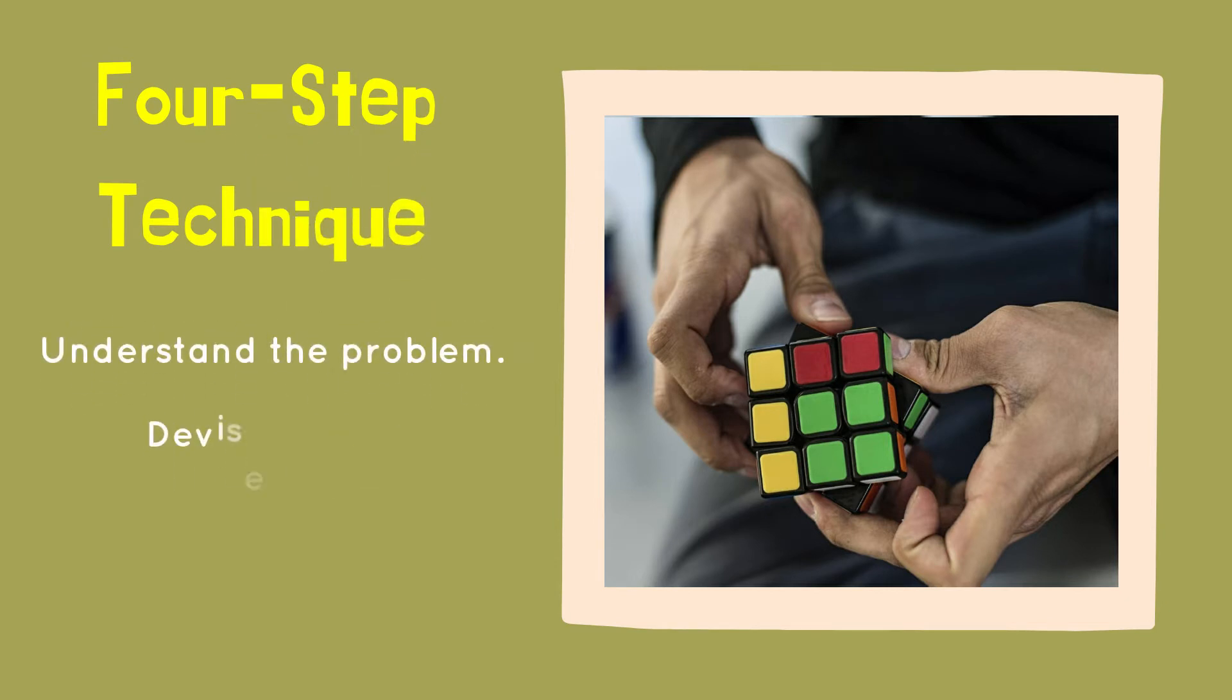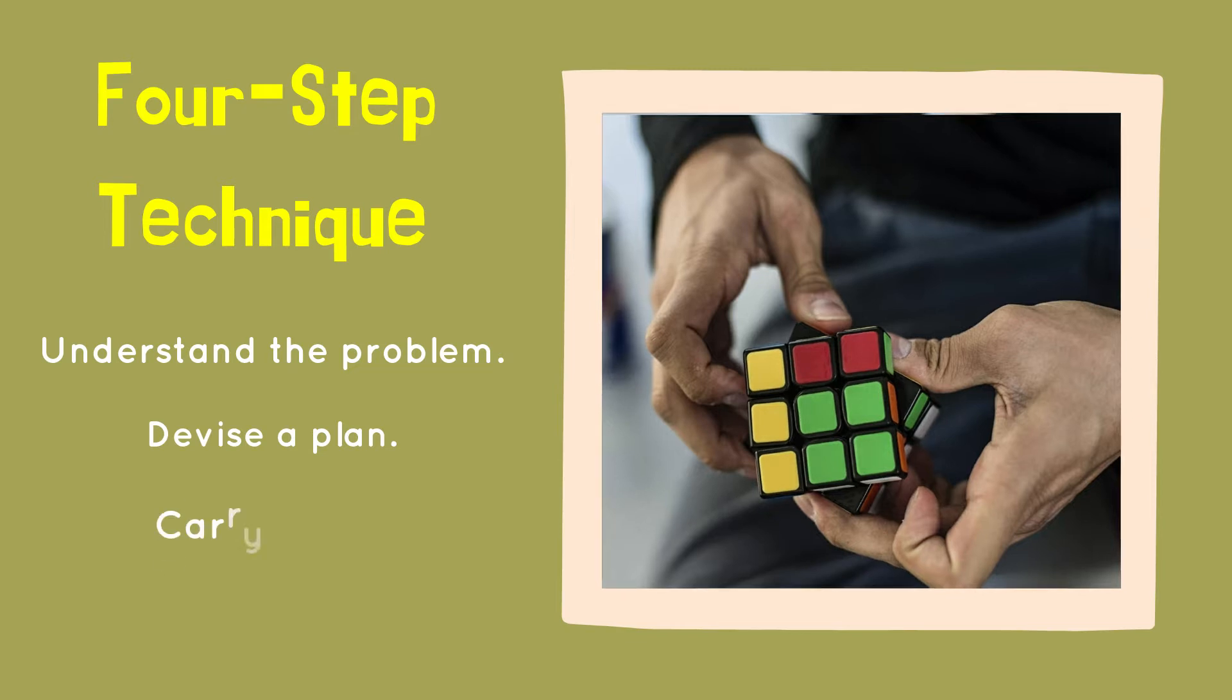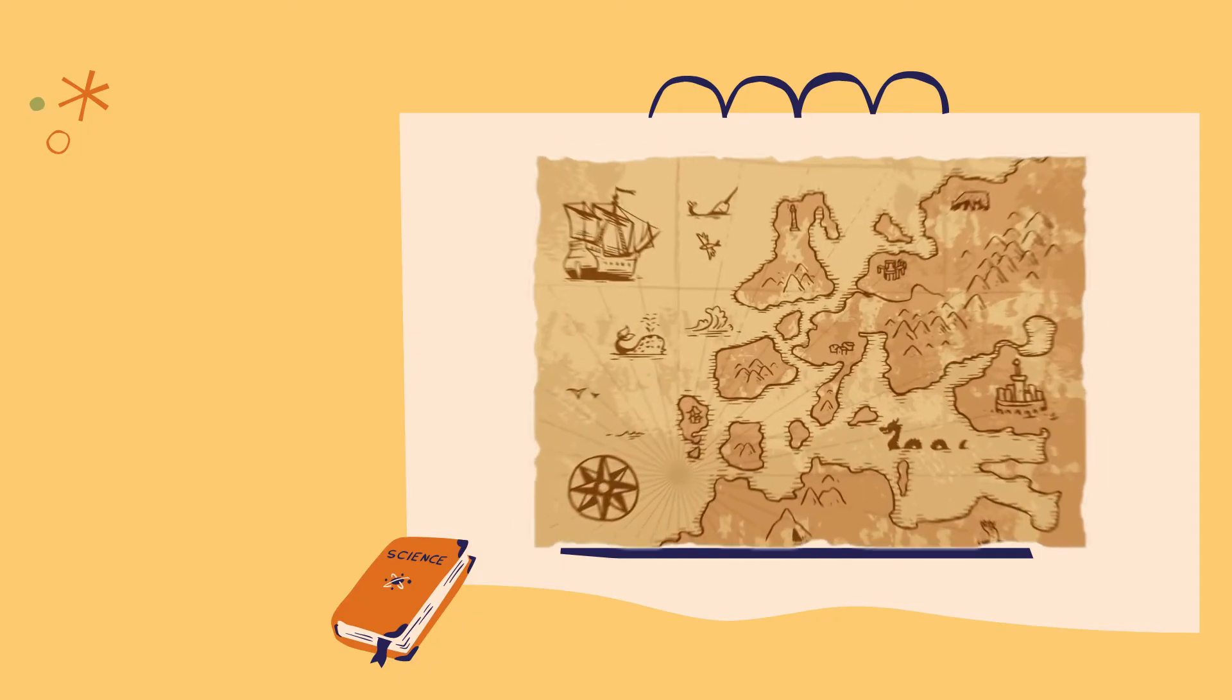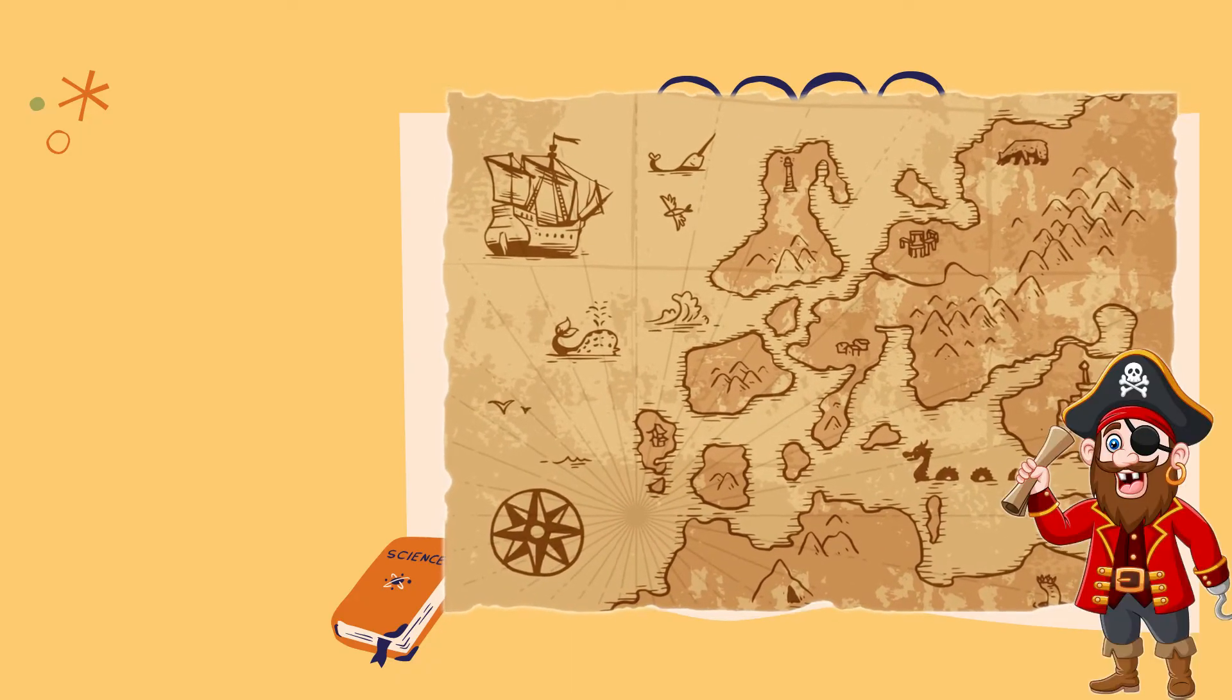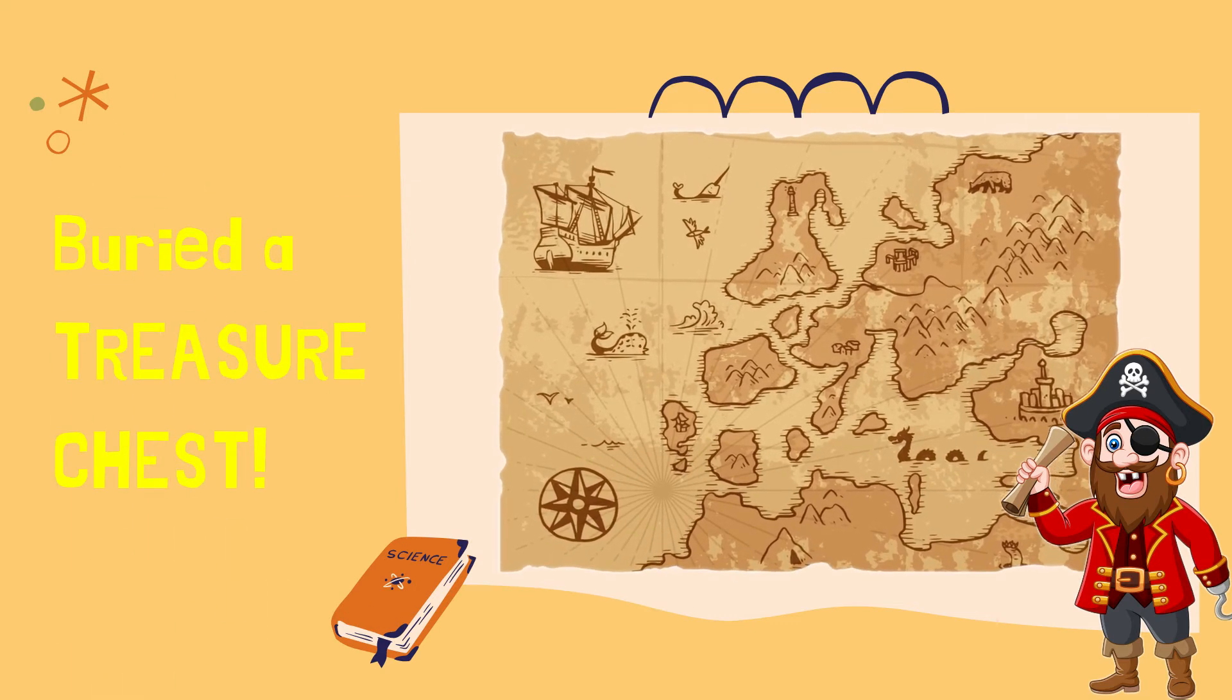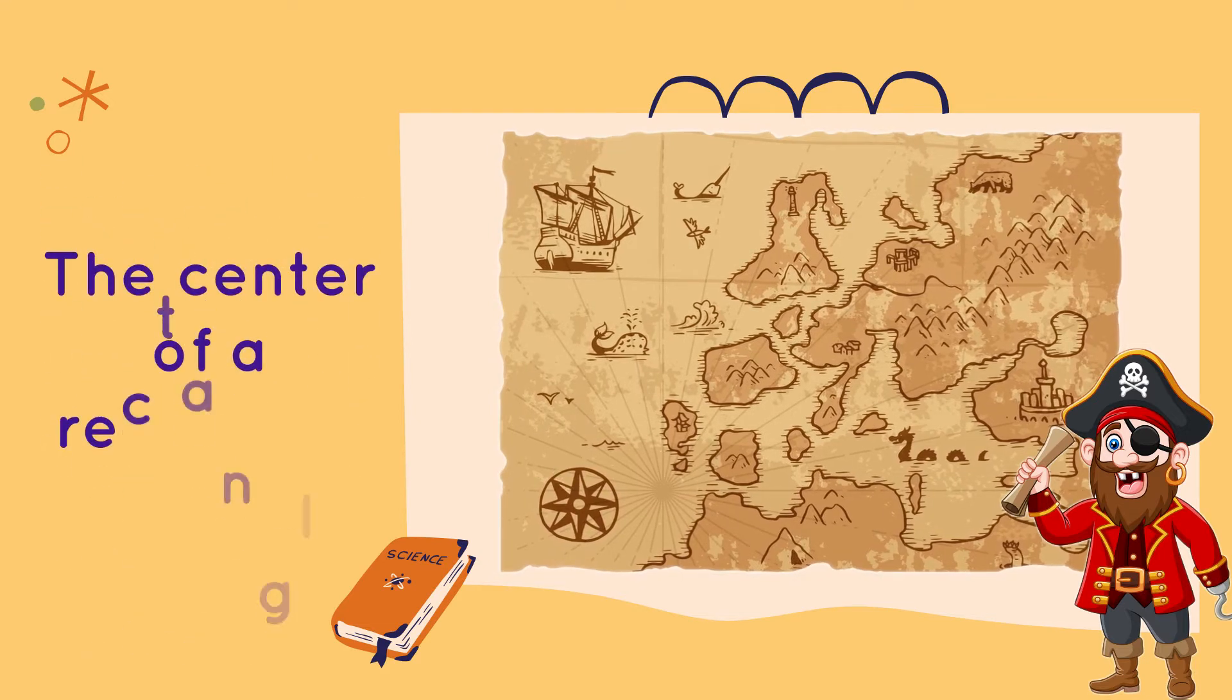Three hundred years ago, pirates came ashore and buried a treasure chest. The treasure is buried precisely at the center of a rectangle somewhere on this map. The rectangle is marked by four metal stakes.